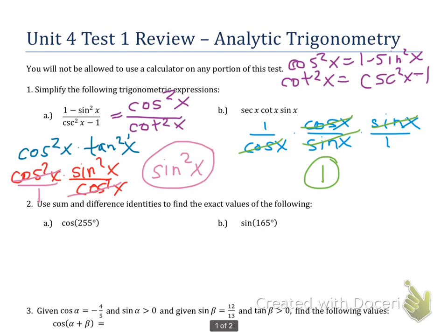So make sure, remember, you're not going to be able to use that first foldable. So you need to make sure you know your quotient identities, your reciprocal identities, and your Pythagorean identities.